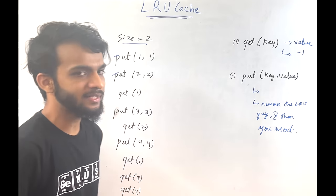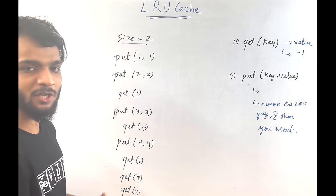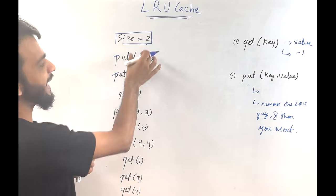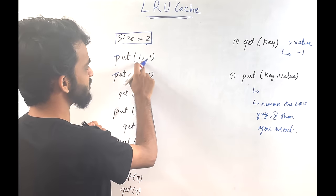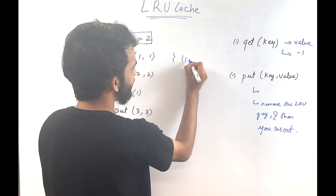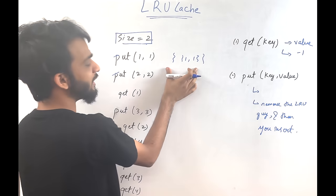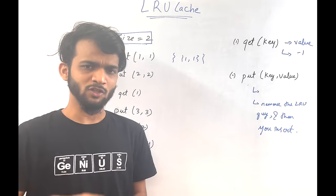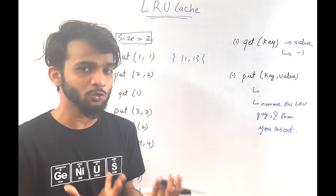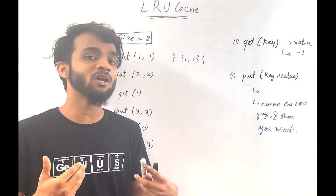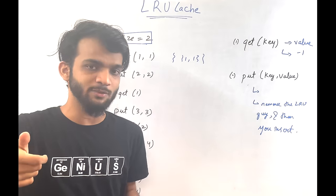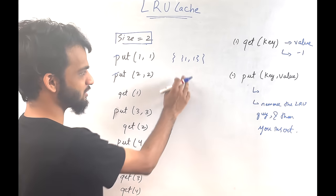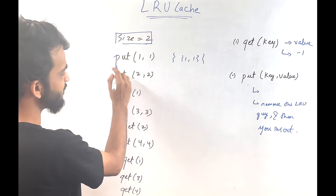Let's dry run these operations to understand the LRU cache. The cache size is 2. To understand LRU: imagine four t-shirts used on Monday, Tuesday, Wednesday, and Thursday. The least recently used is the one from Monday. Applying this, after put(1,1), key 1 is the least recently used.